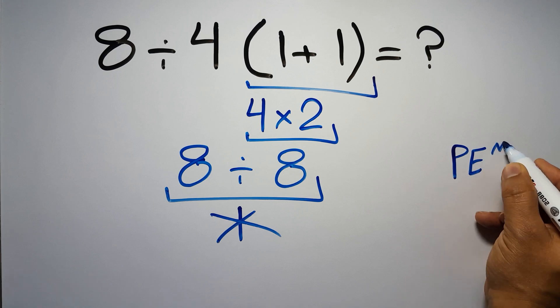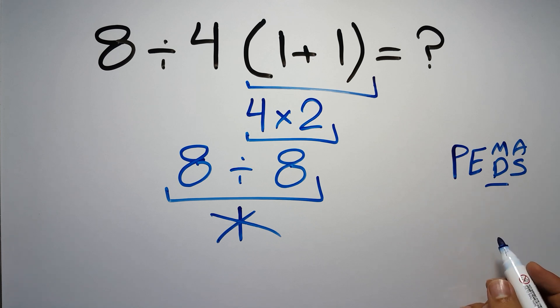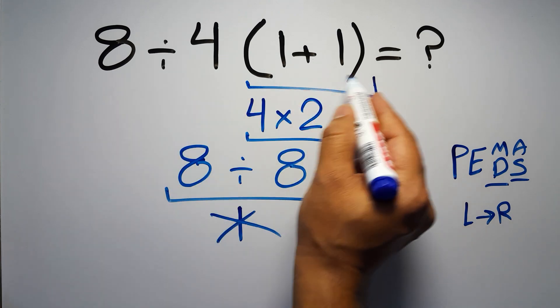Then exponents, then multiplication or division, and the final addition or subtraction. Remember that multiplication and division have equal priority and we have to work from left to right. The same applies to addition and subtraction.